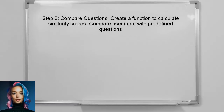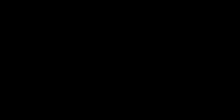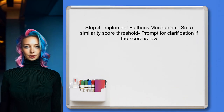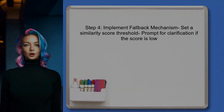After that, the user can create a function to compare the user's question with predefined questions. This function should calculate the similarity score between the user's input and the existing questions to determine the closest match. Finally, the user should implement a fallback mechanism — if the similarity score is below a certain threshold, the system can prompt the user for clarification or suggest related topics.